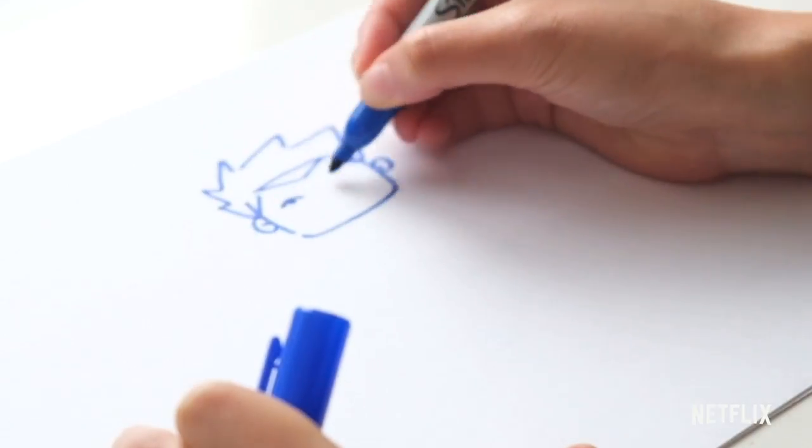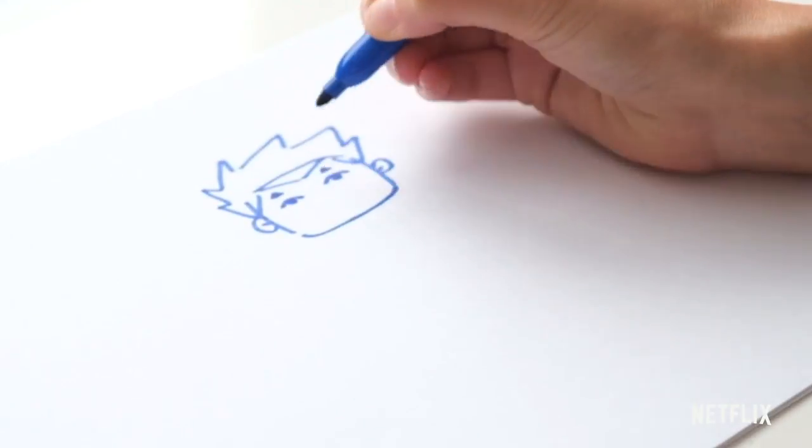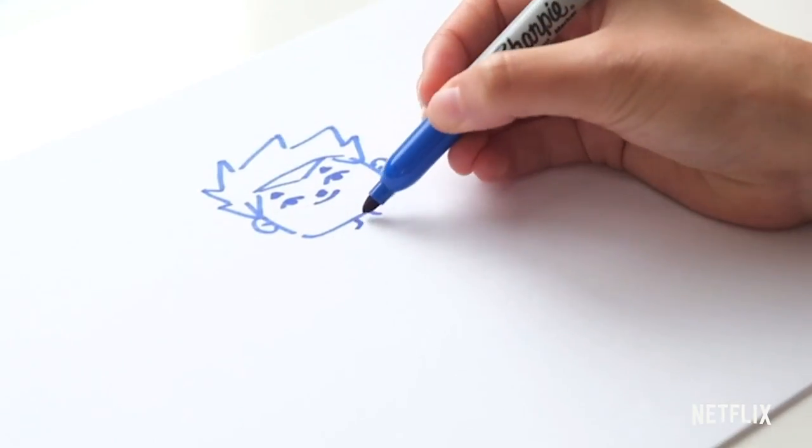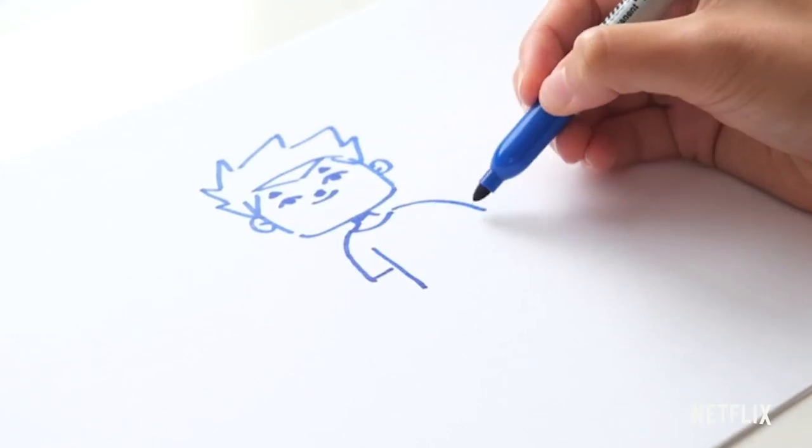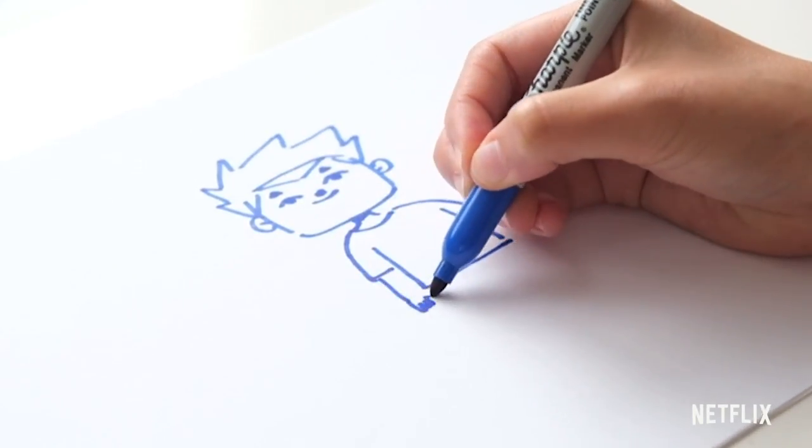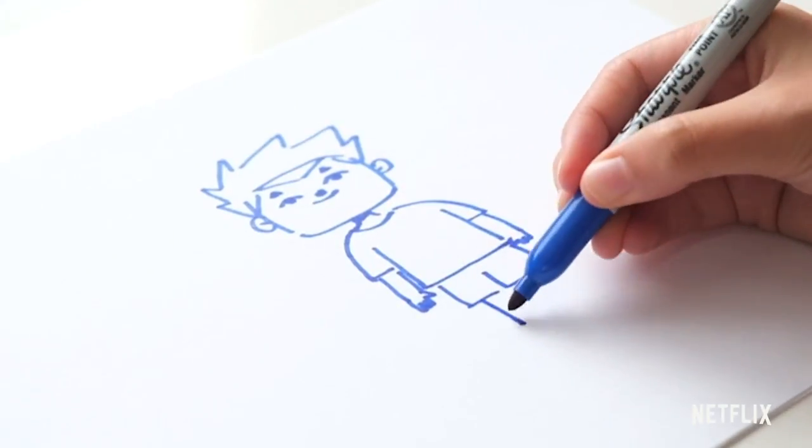His eyes are kind of hooded like this. And he has these eyebrows that are triangle-shaped. And he has a square nose. He has these like sloped shoulders. And he wears this t-shirt. Here are his hands. I usually draw the fingers and then a thumb. And then he wears these shorts like this.